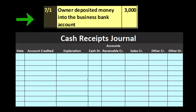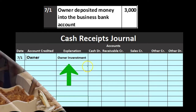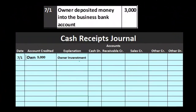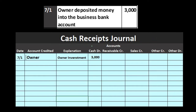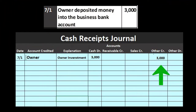On 7-1, the owner deposited $3,000 into the business bank account. The account credited is the owner, and the explanation is 'owner investment.' Cash goes up by $3,000 — we always have a debit to cash in the cash receipts journal. The other side goes into the 'other credit' column because owner investment is not a recurring transaction; hopefully the owner is taking money out rather than putting it in, so we'll break it out at the end of the period.